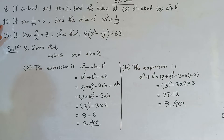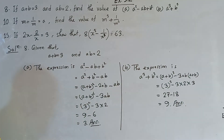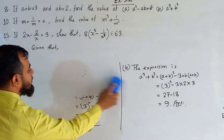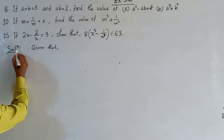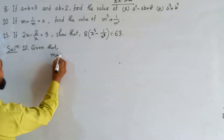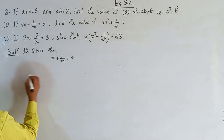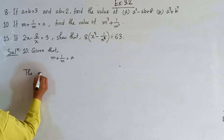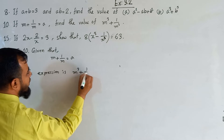Now problem number 10, which is related to questions 10, 11 and 12 — a similar question. That is why I have given question number 11 and 12 as your homework. Now I am solving question number 10: If M plus 1 over M equals A, find the value of M cubed plus 1 over M cubed. First of all we should write down the given information: M plus 1 upon M is equal to A. Now we need to find out the value of M cubed plus 1 over M cubed.